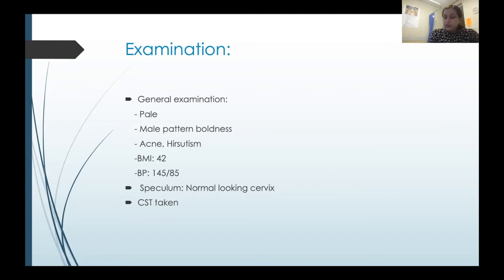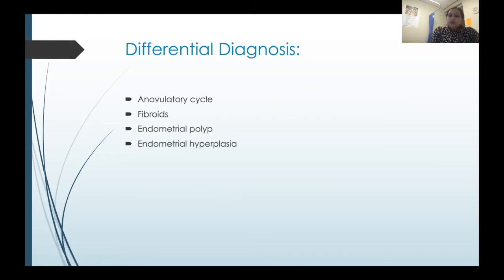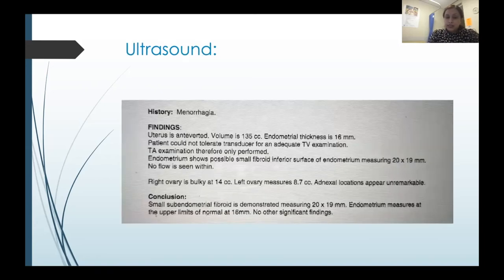Investigations: hemoglobin 60, ferritin significantly low, thyroid function normal, electrolytes and renal function normal, coagulation profile normal. Ultrasound showed a small endometrial fibroid 2x2 cm and endometrial thickness 16 mm — upper limit of normal, so I was not too concerned. I gave her options: try the Mirena, or if family is complete consider endometrial ablation. As her family was not complete and she was planning to have children, I booked her for hysteroscopy and DNC with Mirena insertion. During hysteroscopy, the appearance was very irregular and quite vascular — I was not expecting that. I took a good amount of curetting and put the Mirena in.